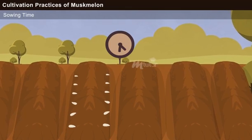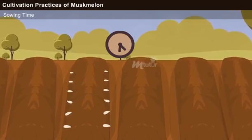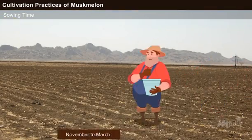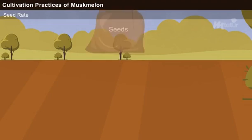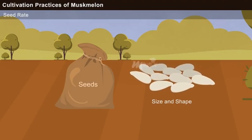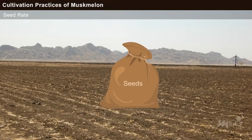Sowing time. The ideal seasons for sowing seeds are November to March on plains and April to May on hills. Seed rate. The amount of seed rate is determined based on the size and shape of seeds. On an average, the recommended seed rate is 3 to 7 kg per hectare.